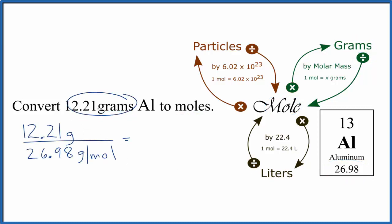So we take our grams given in the problem, we divide that by the atomic mass of aluminum, and note the units are grams per mole. When we do the division, the grams will cancel out, so we're left with 0.45 moles of aluminum.